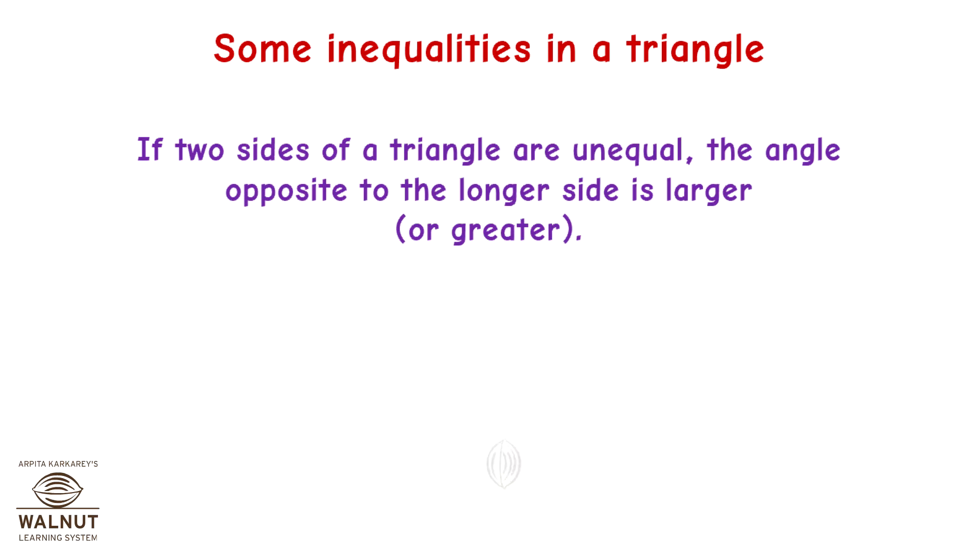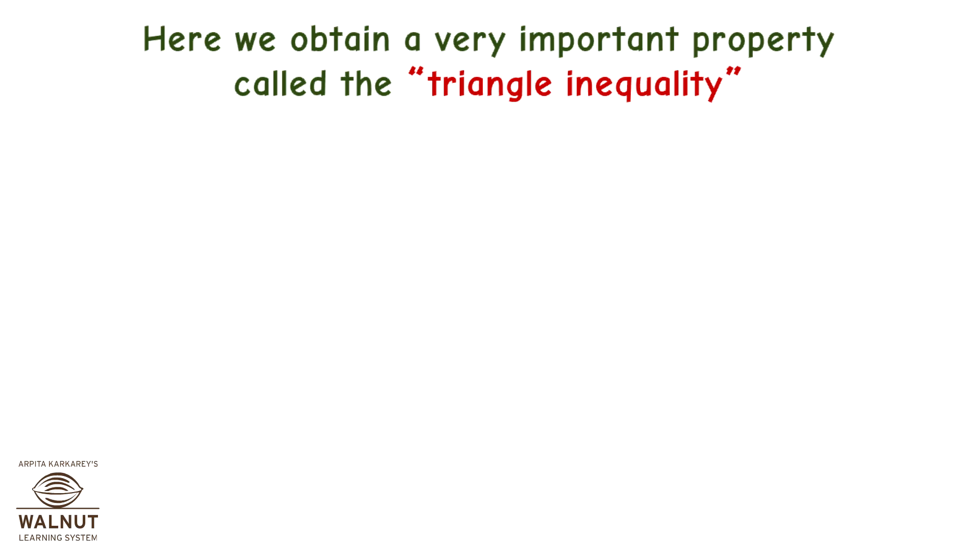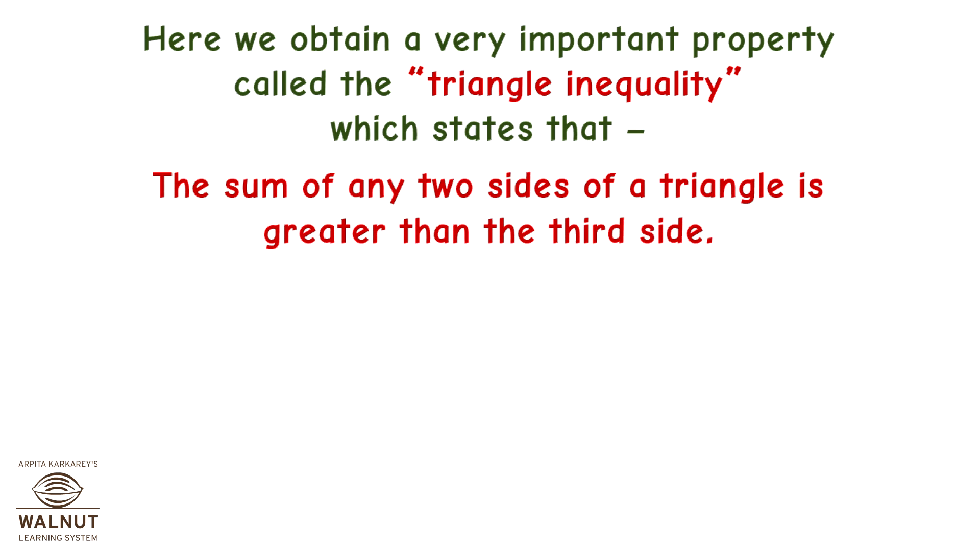If two sides of a triangle are unequal, the angle opposite to the longer side is larger or greater. In any triangle, the side opposite to the larger or greater angle is longer. Here we obtain a very important property called the Triangle Inequality, which states that the sum of any two sides of a triangle is greater than the third side. This applies to any triangle.